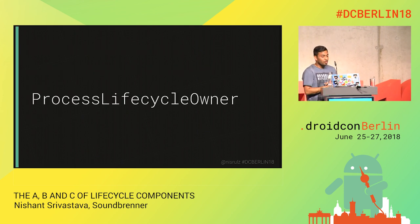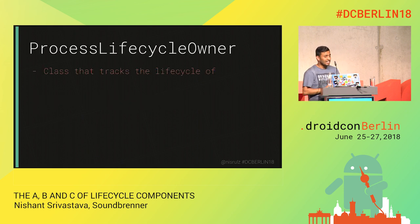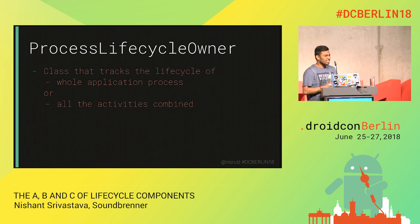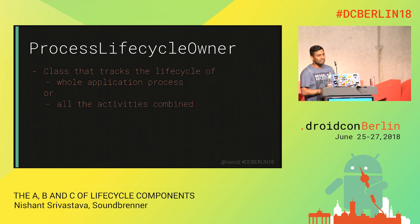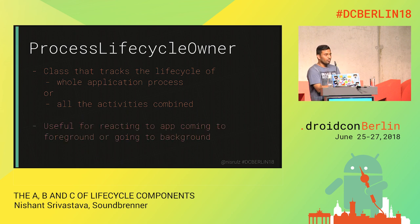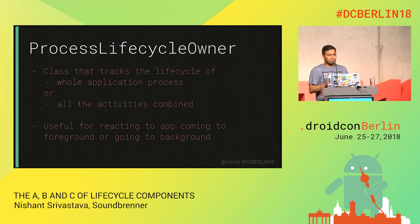ProcessLifecycleOwner is a class that tracks the lifecycle of the whole application process, or rather all the activities combined. The naming is a bit weird — it looks like it's tracking the process lifecycle, but as a process there are only two states. In Android, however, the app goes into the background and comes into the foreground, which is what ProcessLifecycleOwner actually does. It should probably be called app background-foreground lifecycle owner, but it's called ProcessLifecycleOwner for some reason.